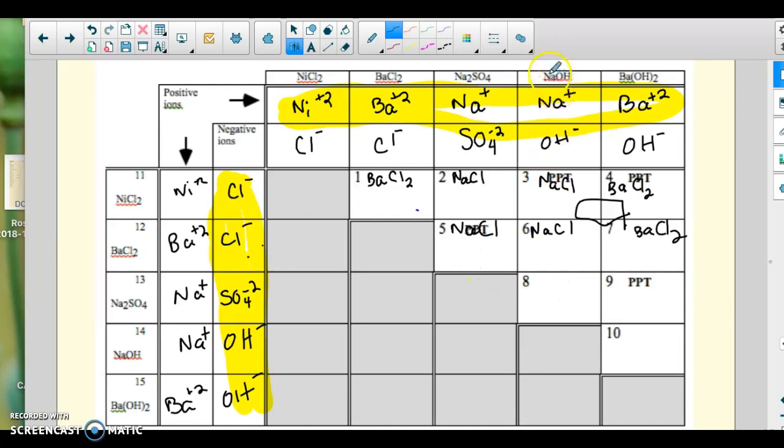Then lastly, if I go here, I'm going to have sodium, which is plus 1, with the sulfate, minus 2. So I would need to have 2 sodiums for every 1 sulfate. Here I'm going to have the barium with the sulfate. Barium is plus 2, sulfate is minus 2. Sometimes we crisscross, but we don't need to because they already add to 0. So the formula would be BaSO4.